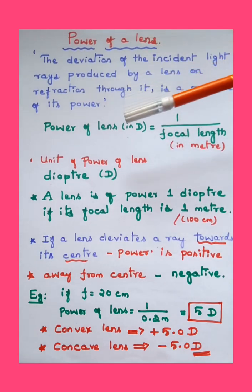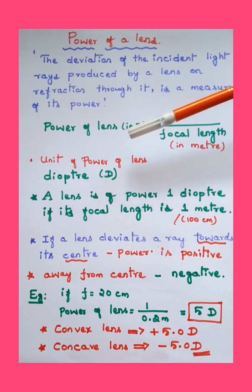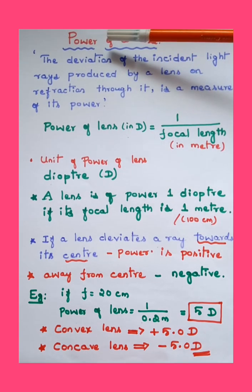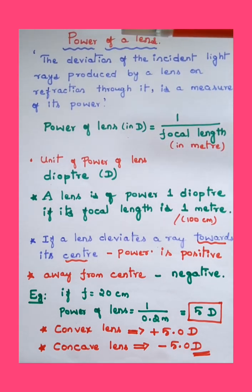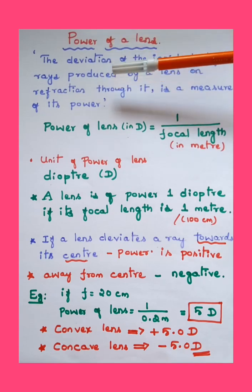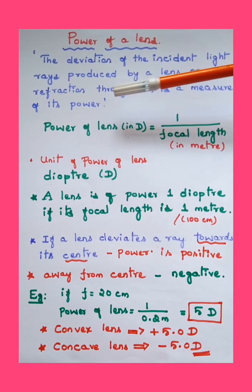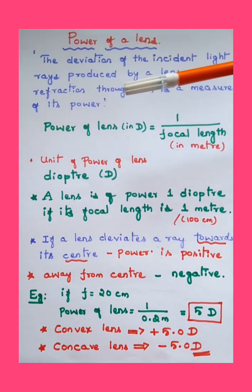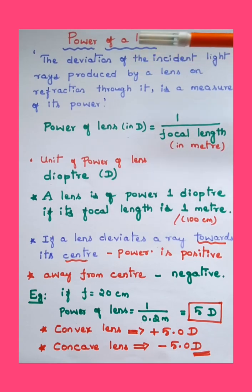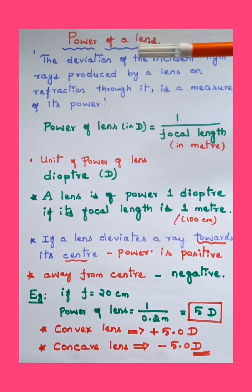The deviation produced by the lens is expressed in terms of its power. A lens which produces more deviation has more power - remember, more deviation has more power. We define power of a lens like this: the deviation of the incident light rays produced by a lens on refraction through it is a measure of its power.